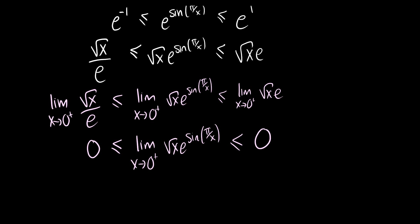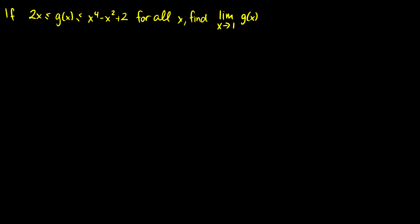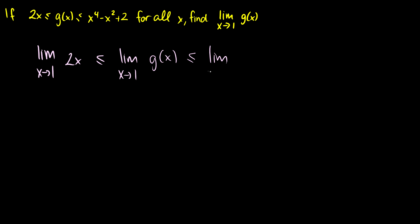So that's how you use the squeeze theorem. Let's do a second example. If 2x is less than or equal to g(x) is less than or equal to x to the 4 minus x squared plus 2 for all x, let's find the limit as x goes to 1 of g(x). This one is a bit more straightforward. All we need to do is evaluate the left and right sides as x goes to 1, and if they're the same number then we know the limit as x approaches 1 of g(x).